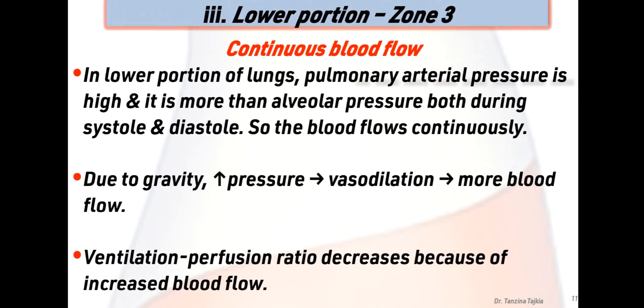Zone 3 is where continuous blood flow occurs. In the lower portion of the lungs, pulmonary arterial pressure is high and is more than the alveolar pressure both during systole and diastole, so blood flow occurs continuously. Due to gravity, increased pressure causes vasodilation and more blood flow. Here the ventilation-perfusion ratio decreases because of the increased blood flow.